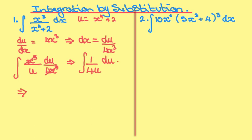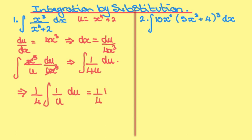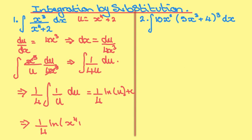I'll take the quarter outside, so I want one quarter times the integral of one over u du. Well, one over u integrates to give one quarter log u plus c. I know what u is — u is x to the power of four plus two — so therefore my final answer is one quarter log(x to the power of four plus two) plus c.